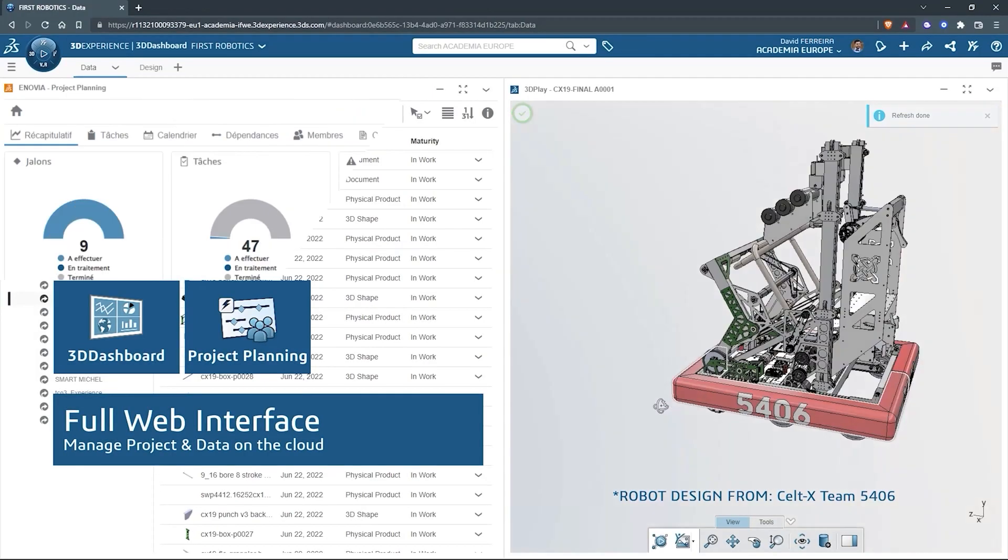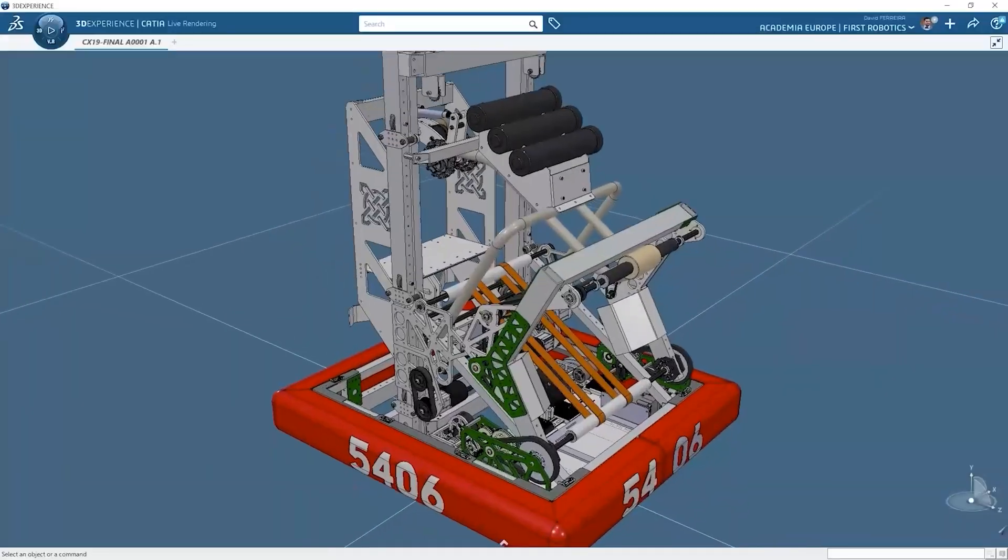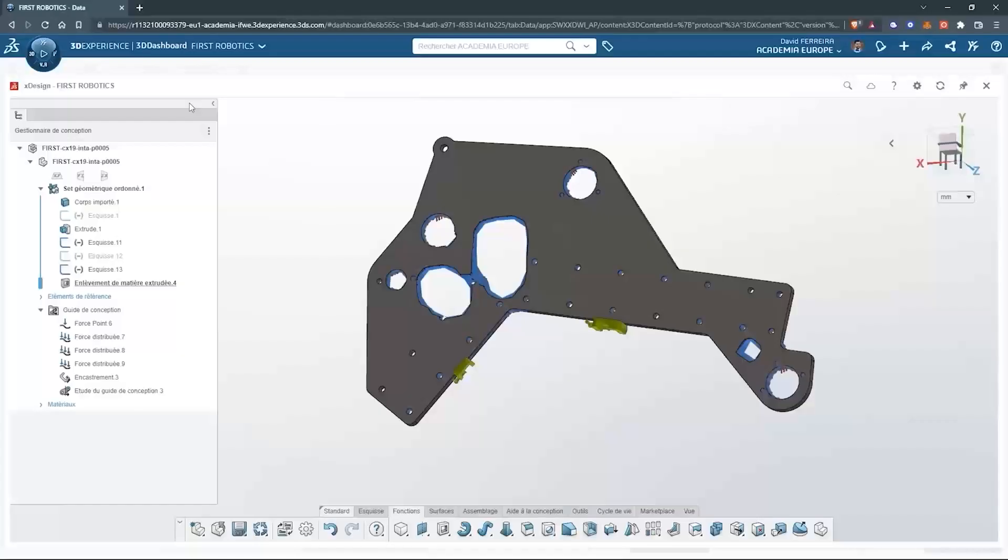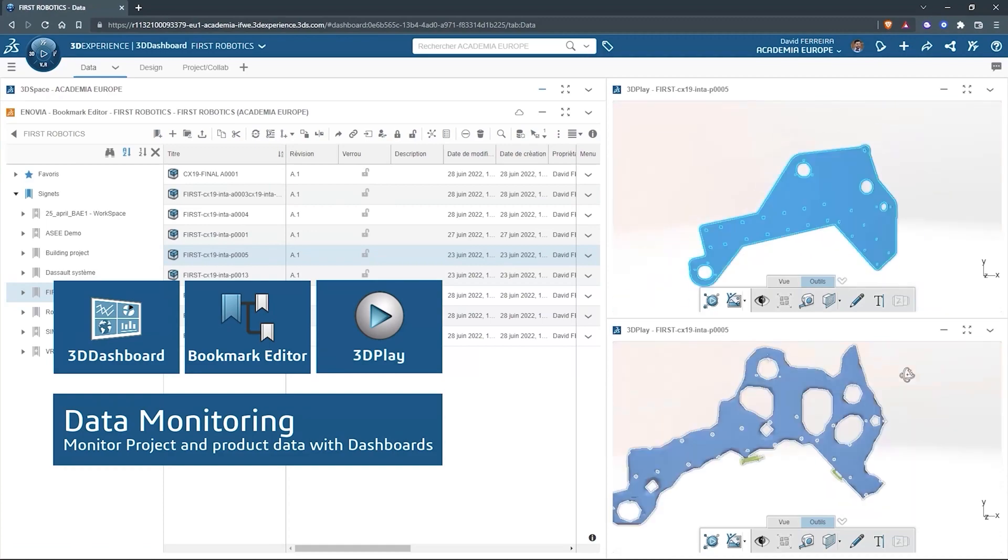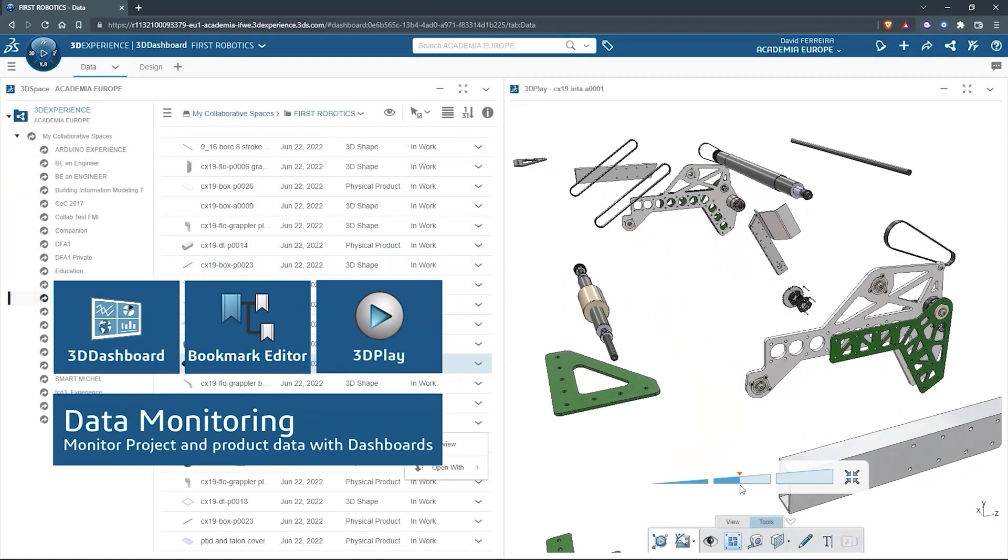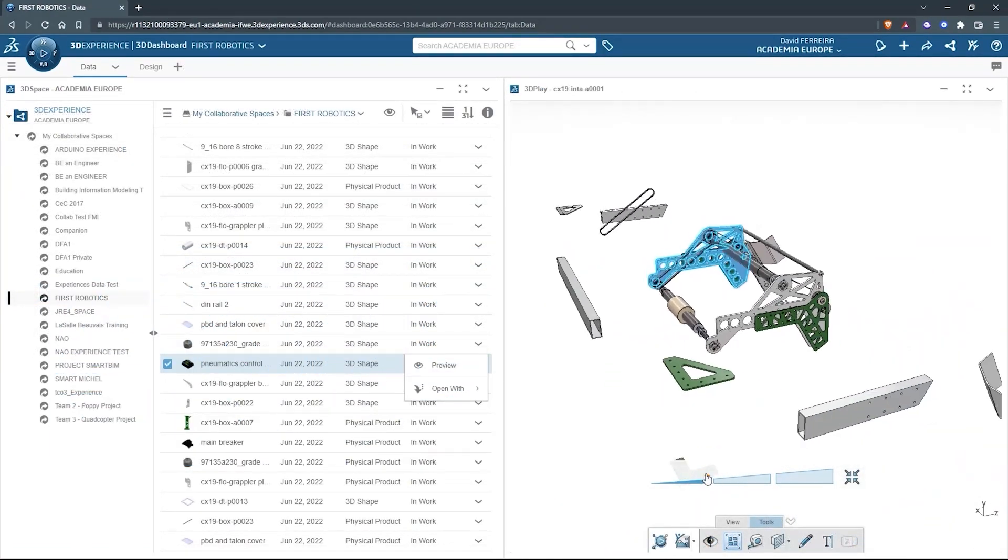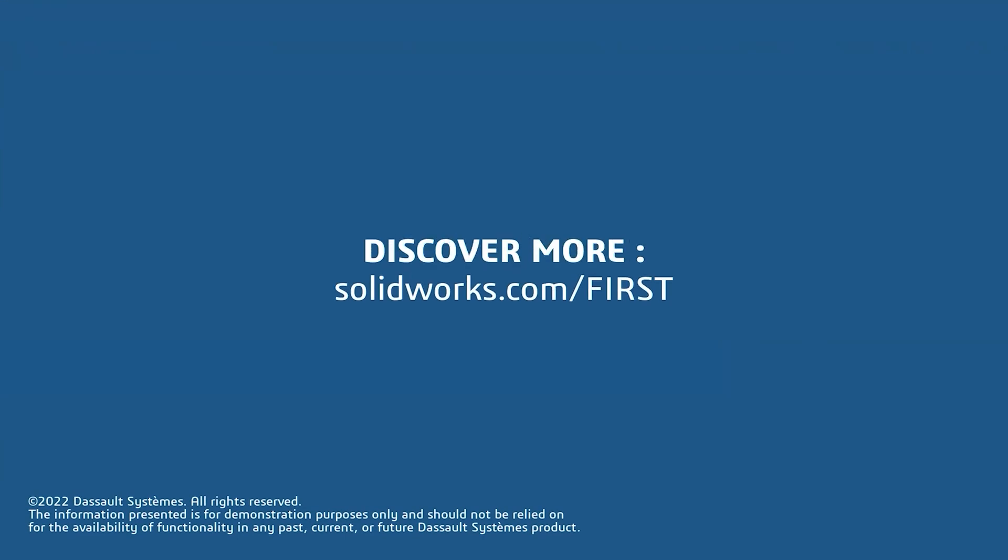SolidWorks is free for first teams. Over 80% of US engineering schools and 370,000 plus companies use SolidWorks to design great products. SolidWorks can help you design a great robot on desktop or on the cloud. Go to solidworks.com slash first to register your team.